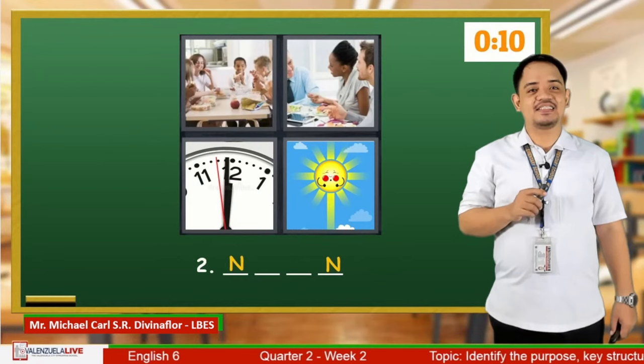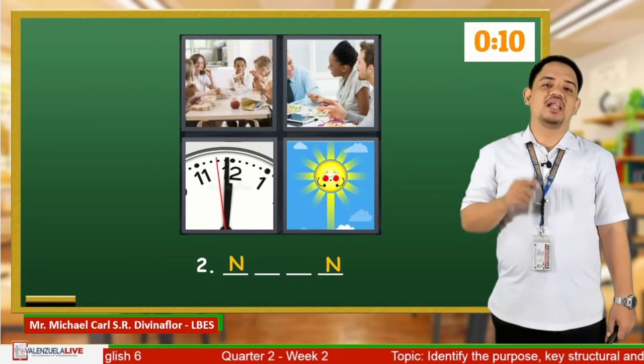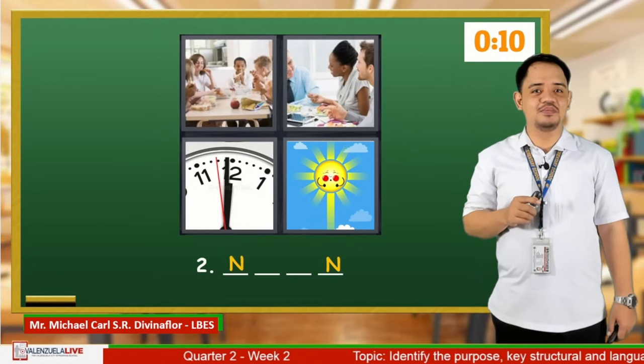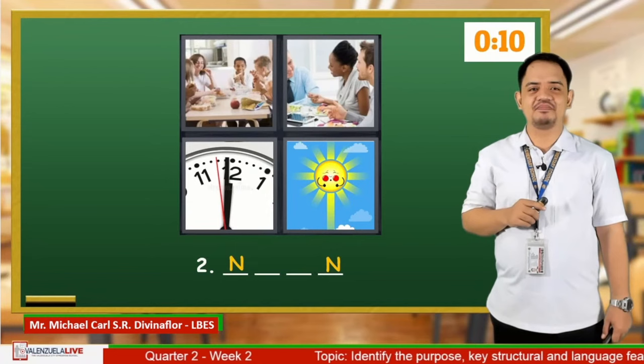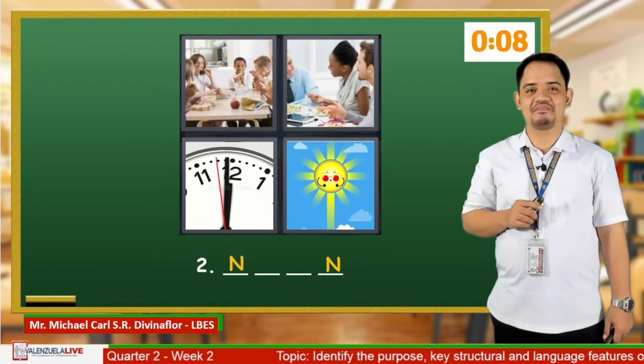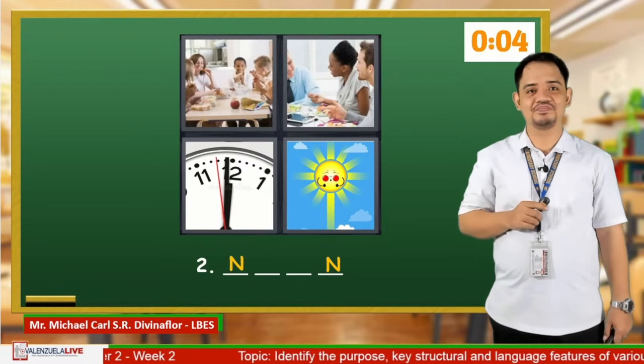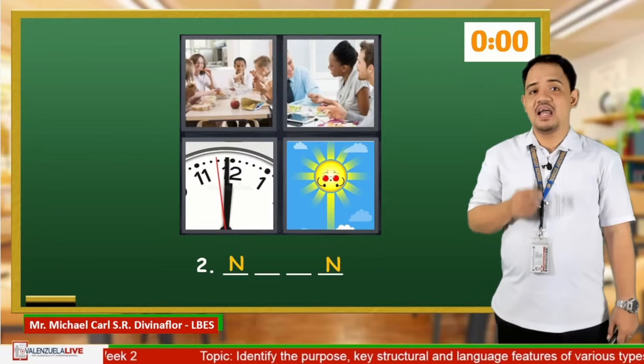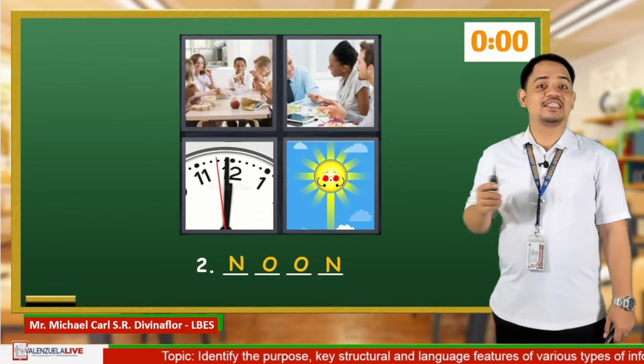Now let's go to number 2. The 4 pictures on the board consist of people eating together in the canteen, people eating heavy food, a clock that nearly comes to 12, and the sun shining straight down brightly. What word do these pictures refer to? And the answer is Noon! Did you get it? Sweet!